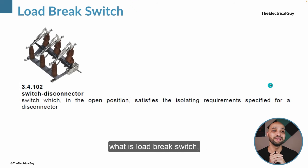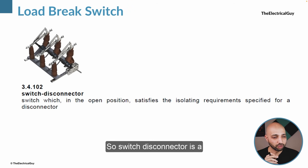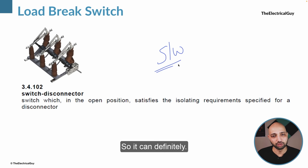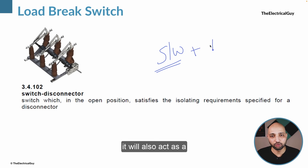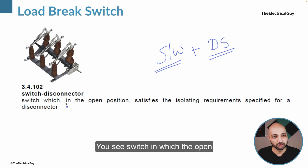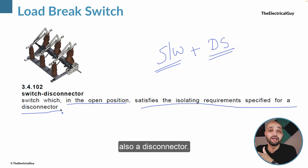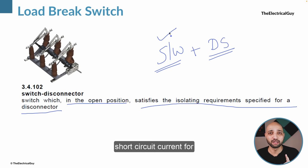Moving on to understand what a load break switch is — IEC calls it a switch disconnector. A switch disconnector is a switch which in the open position satisfies the isolating requirement specified for a disconnector. So it is the combination of a switch and a disconnector: it can make, break, and carry the normal system current, and when opened it will also act as a disconnector. It can also carry the rated short circuit current for a specified time.